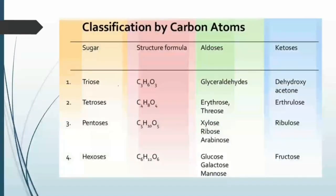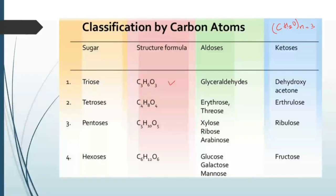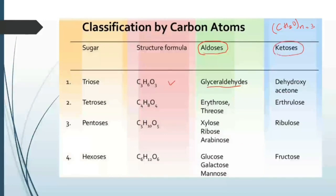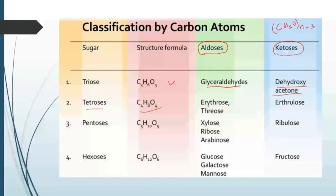Based on the carbon atoms, using the formula (CH₂O)n: if n is 3, it is a triose — formula C₃H₆O₃ — and the example is glyceraldehyde in the aldose form (aldehyde group). In the ketose form (ketone group) it is dihydroxyacetone. For tetroses with four carbons, the formula is C₄H₈O₄; in the aldose form examples are erythrose and threose, and in the ketose form it is erythrulose.